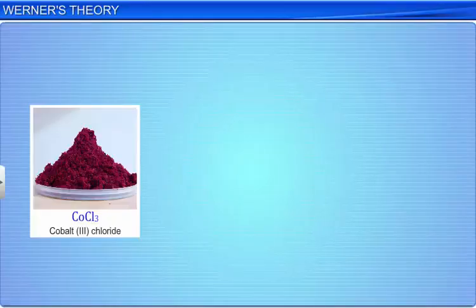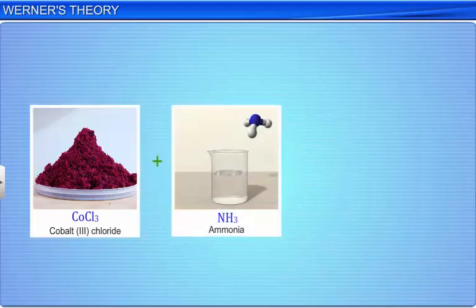Have you ever wondered why a stable salt, such as cobalt trichloride, combines with a group of stable, independently existing molecules, such as ammonia?